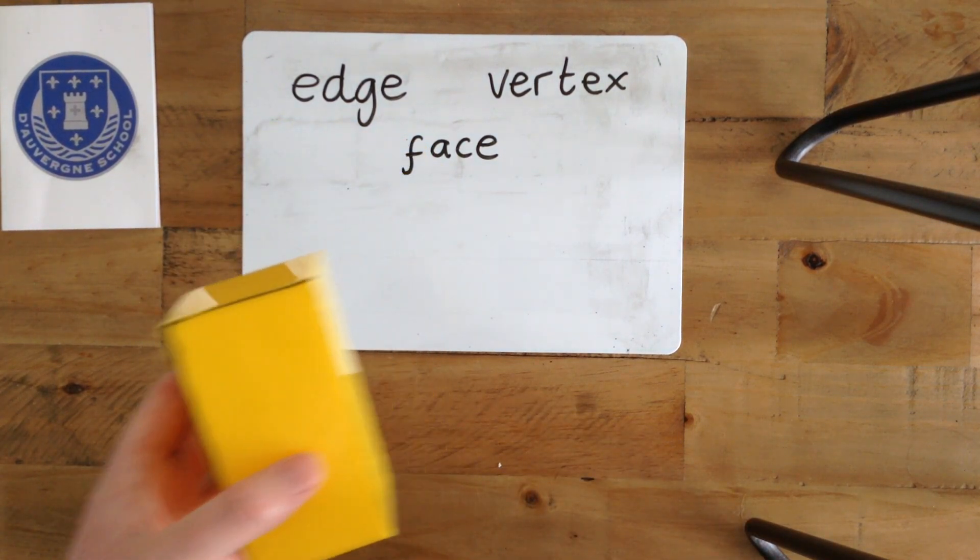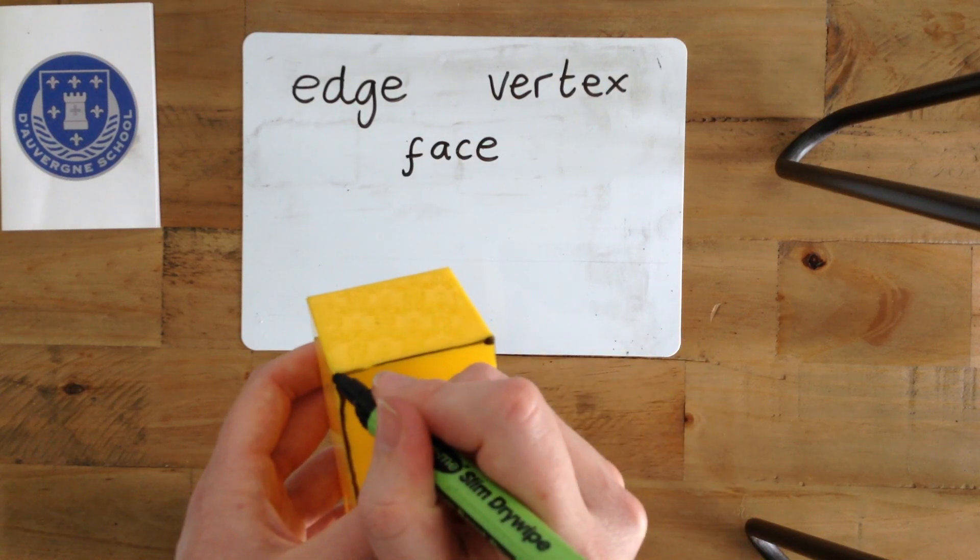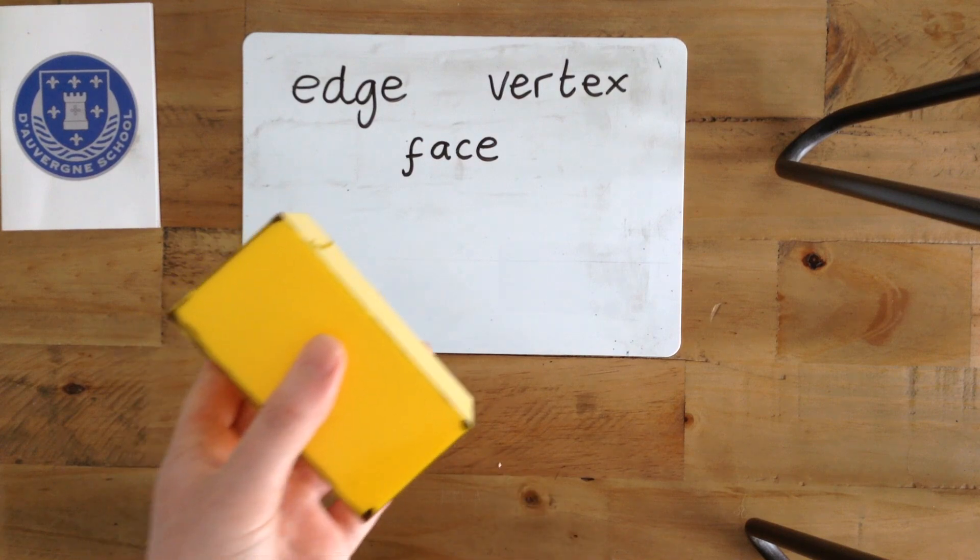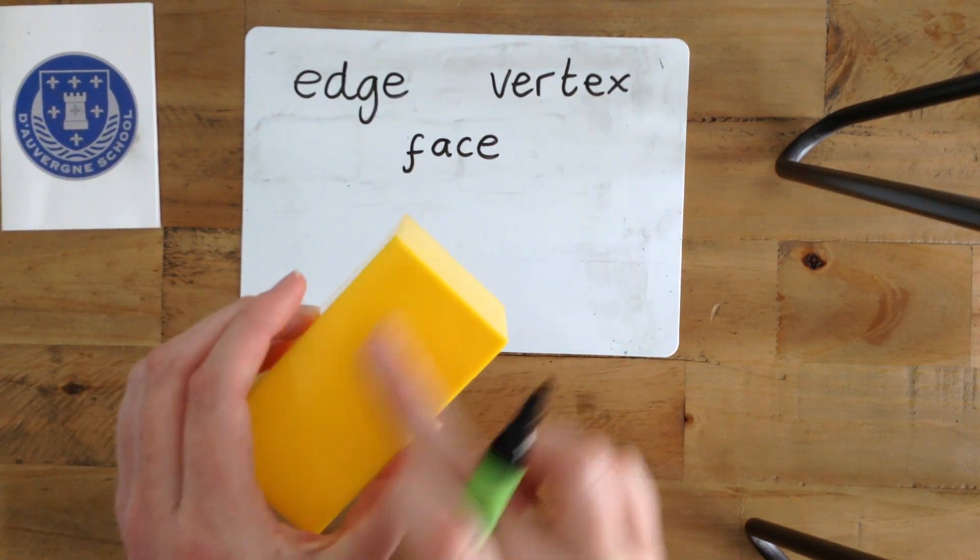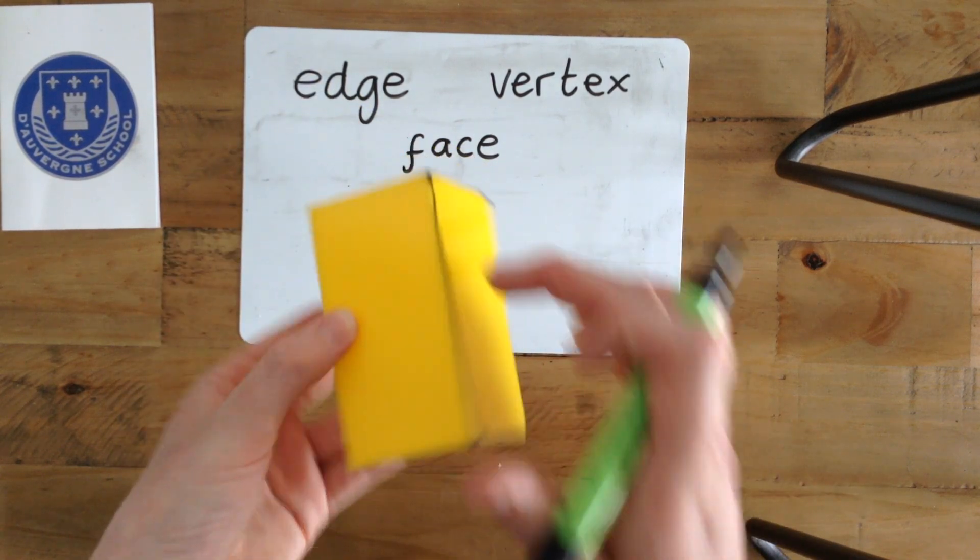We also have our vertices—these here are the corners. And our faces are these here. These are the faces of a cuboid.